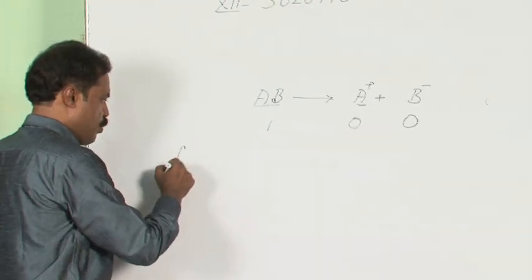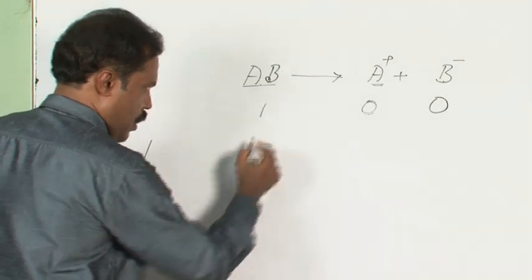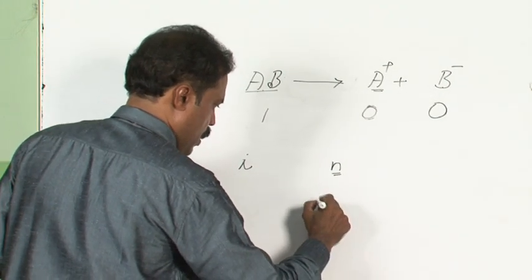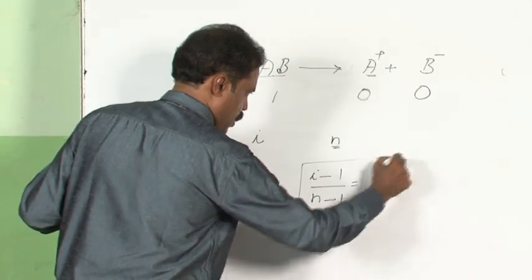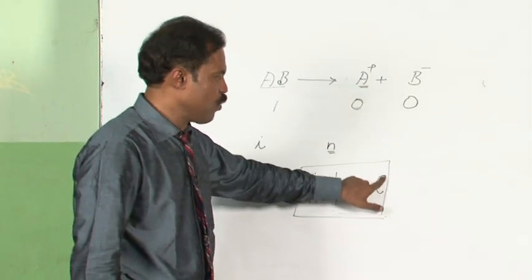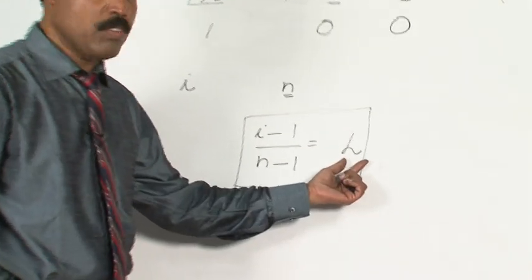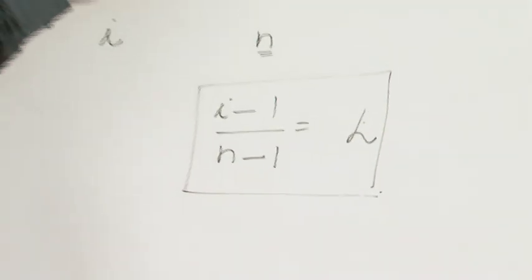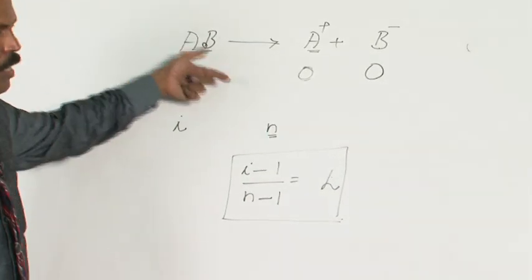For a substance AB dissociating to form A⁺ and B⁻, if the degree of dissociation is alpha, the Van't Hoff factor is i, and the total number of particles produced on dissociation is N, you can easily derive that (i − 1) / (N − 1) = alpha. Using this, you can find the value of i if the value of alpha is known, where alpha is the degree of dissociation.